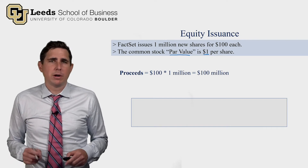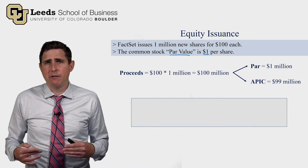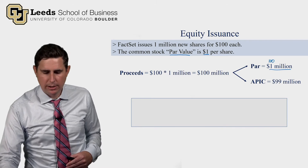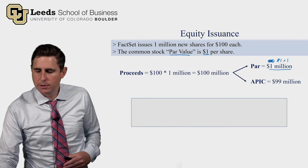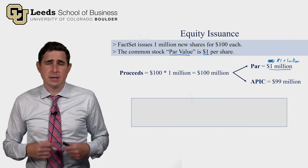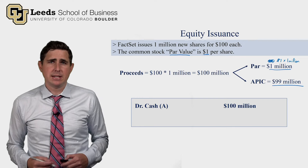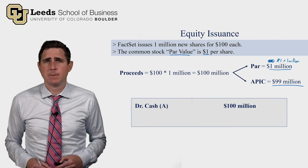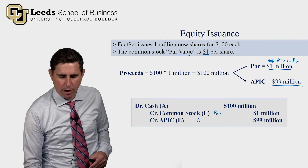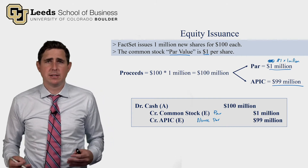We split the $100 million of proceeds into two parts: the par value and anything additional above par value. The par value is $1 times 1 million shares, which is $1 million. Anything over and above that — the remaining $99 million — is APIC. The journal entry is a debit to cash of $100 million, a credit to the common stock account for the par value, and a credit to the APIC account for the remainder.